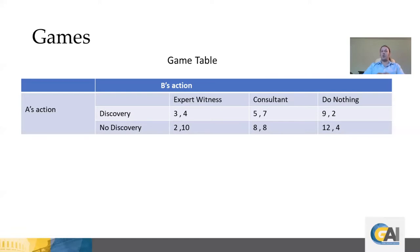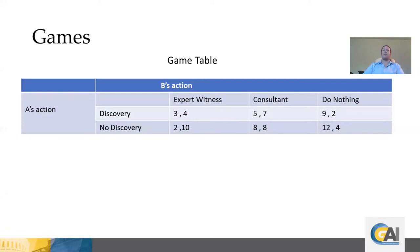This simple game is also useful for illustrating interactions. Note that A's payoff is not only dependent on his or her own action, but also on B's action. If A chooses discovery and B chooses the expert witness option, A collects a payoff of three. But if B switches from expert witness to consultant, A's payoff shifts to five. So A is not in complete control of her payoffs — this payoff is also affected by B's actions.